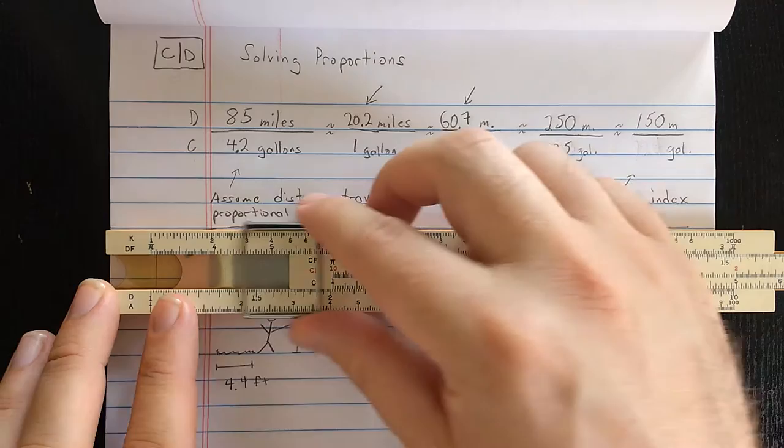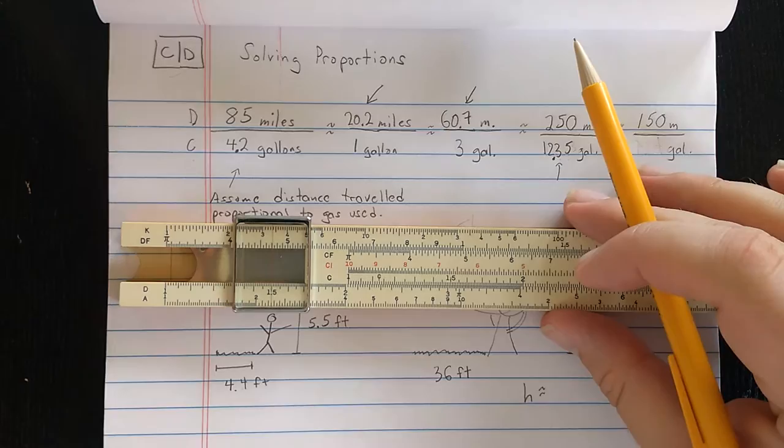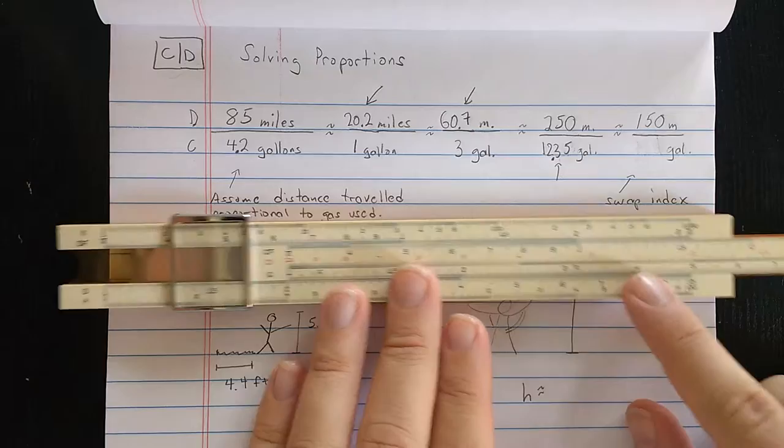Now, what if instead I want to go 150 miles? Well, I should find the 1.5 on the D scale. But now I have a classic slide rule problem that the result I want is not underneath the cursor on the scale that I want. This is called going off scale.